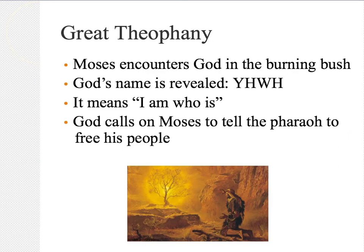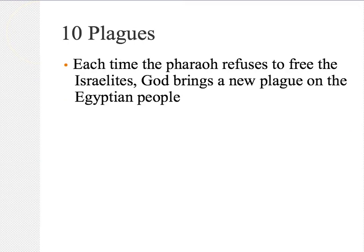He's not just the God of the Israelites — he's the God of all people and all time. This name reveals a lot about who God is. God calls on Moses to tell the Pharaoh to free his people so that they might worship him again. In order to do that, he helps Moses out by bringing down a plague on the Egyptian people each time the Pharaoh refuses to free the Israelites.